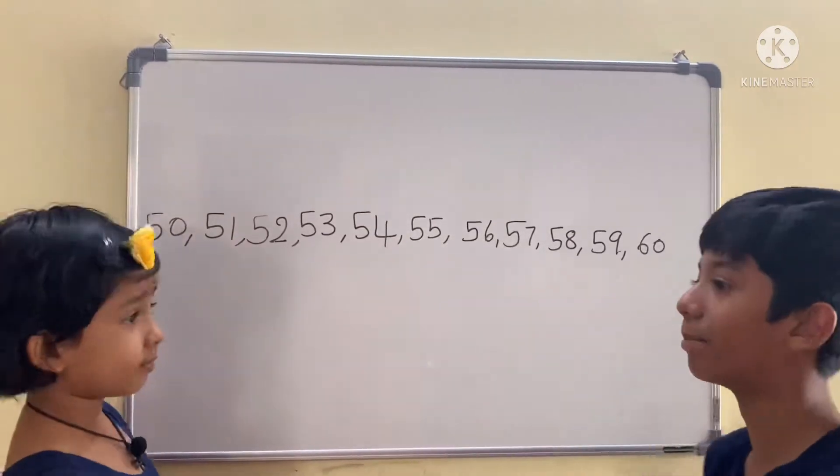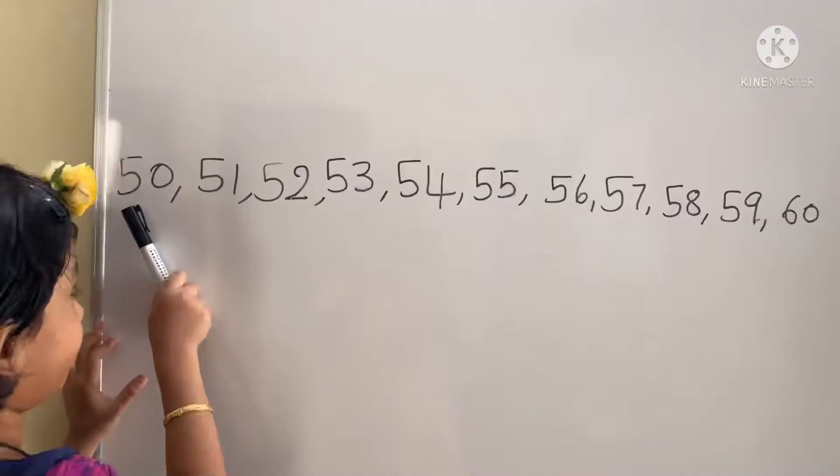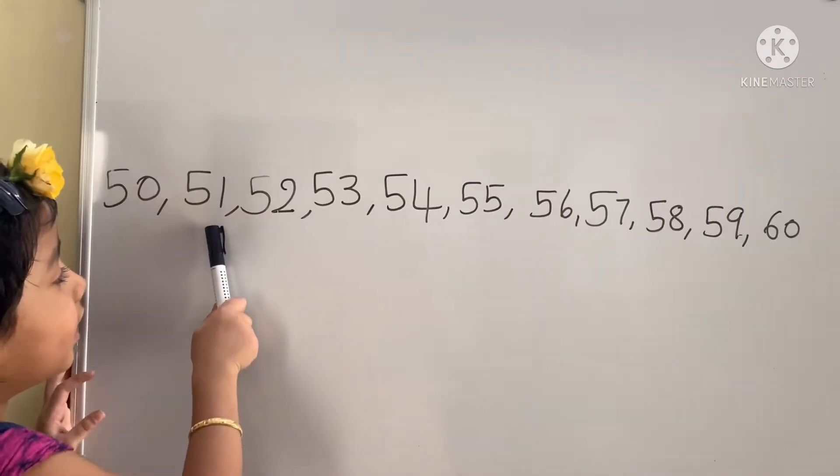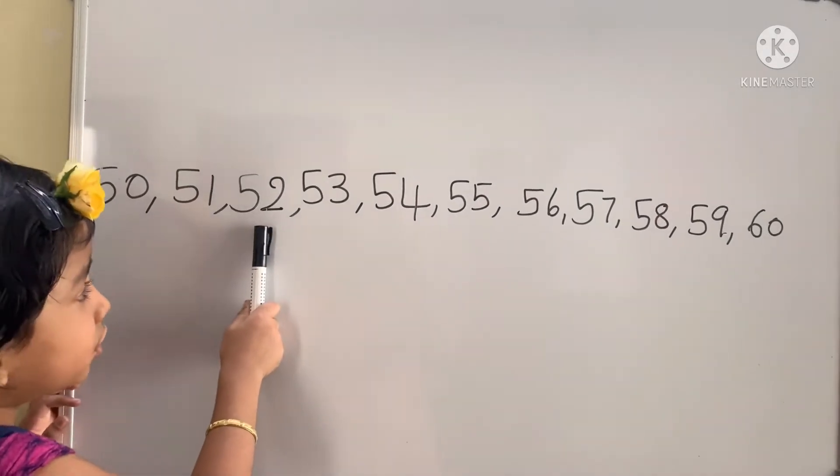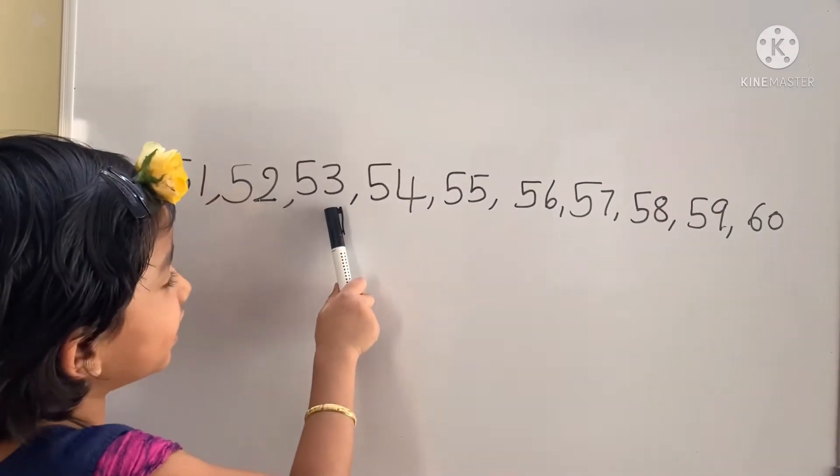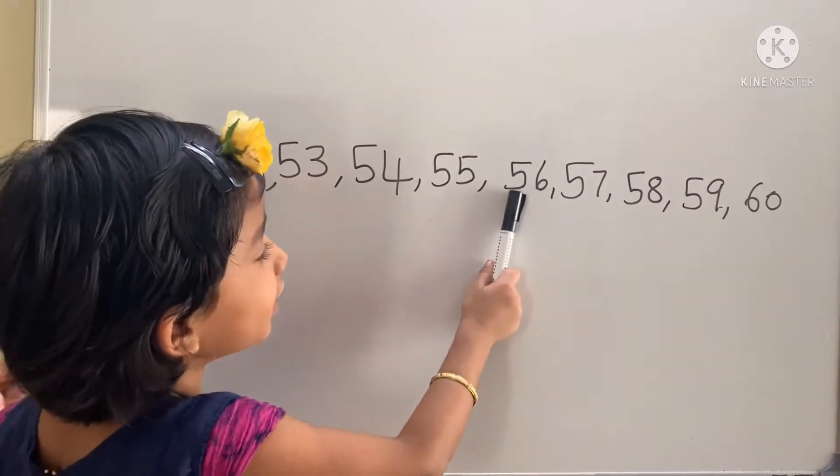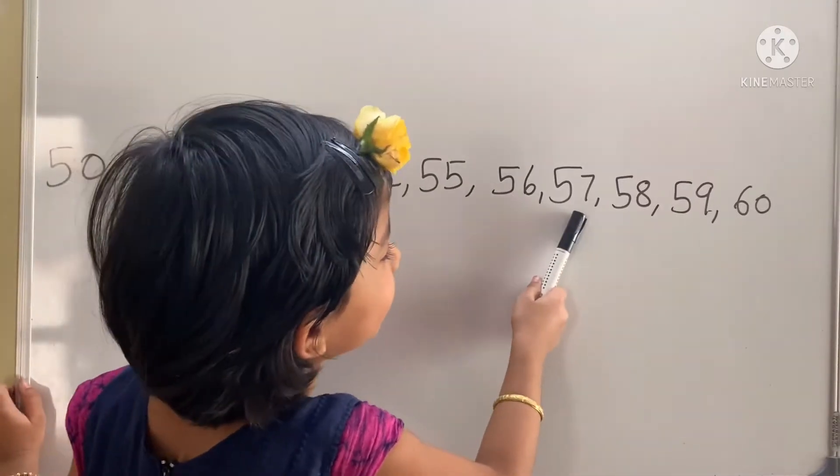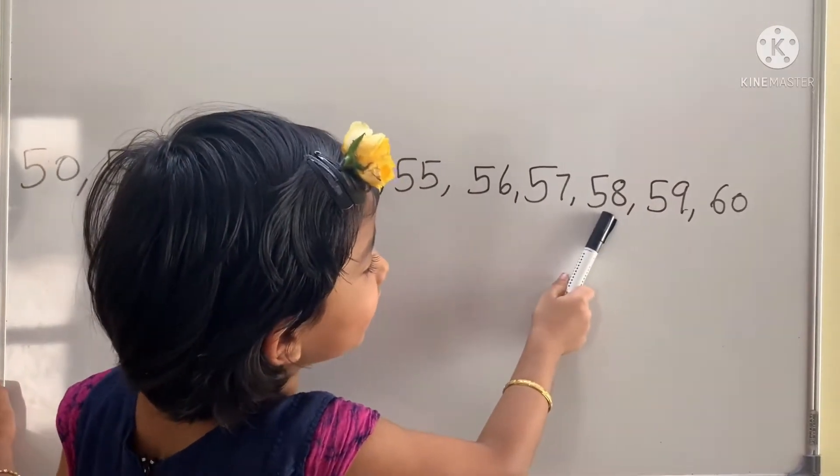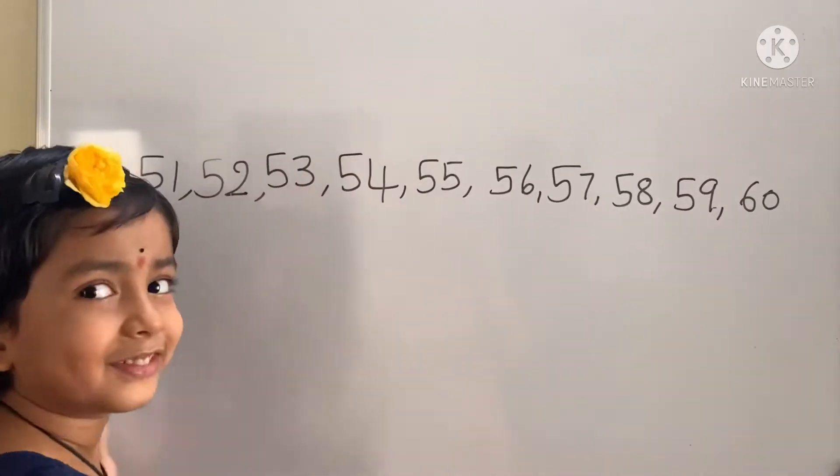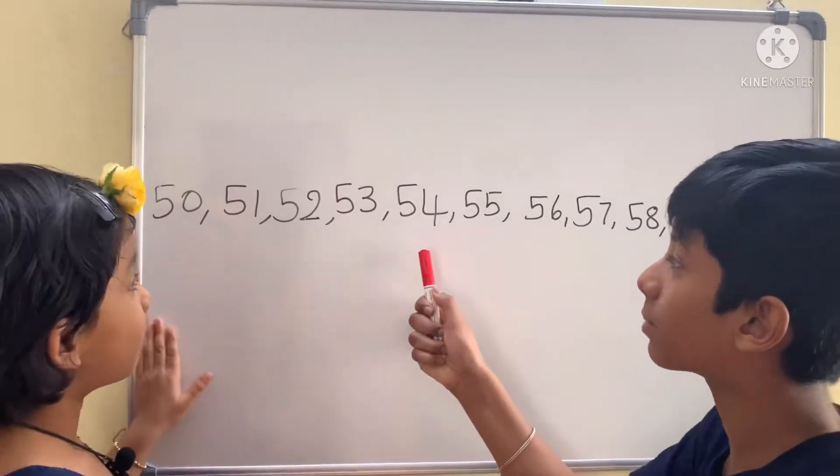50 to 60 numbers? Okay: 50, 51, 52, 53, 54, 55, 56, 57, 58, 59, 60. Baby, what is before 54? 53. Baby, what is after 51? 52. So baby, what is before 56?